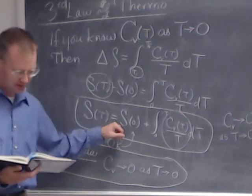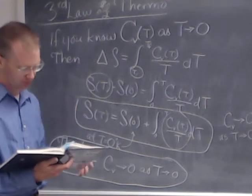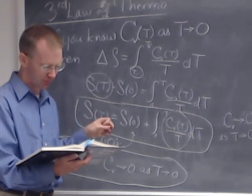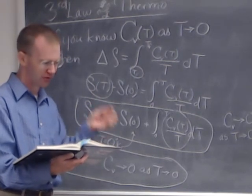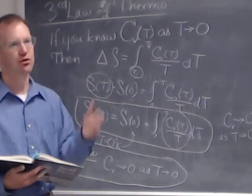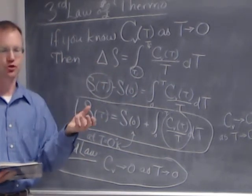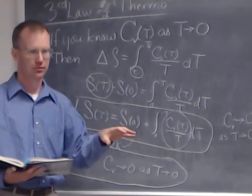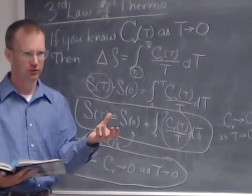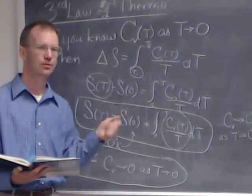What is the entropy of a system at absolute zero? In principle, it's also zero. At zero degrees Kelvin, a system should settle into its unique lowest energy state — the ground state. It may have only one way of arranging itself, giving a multiplicity of one, and the natural log of one is zero, so the entropy is zero.